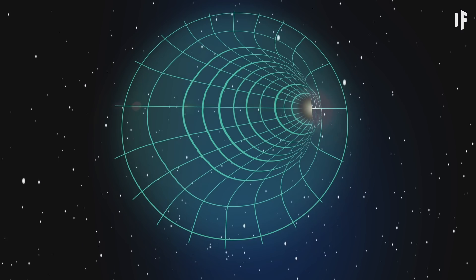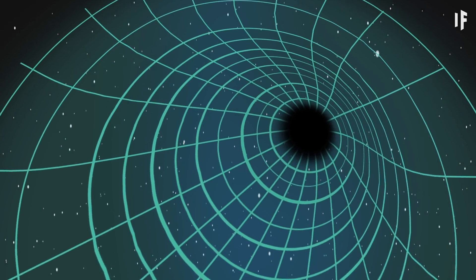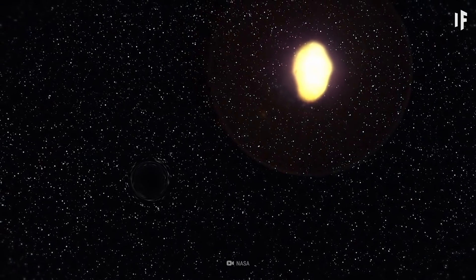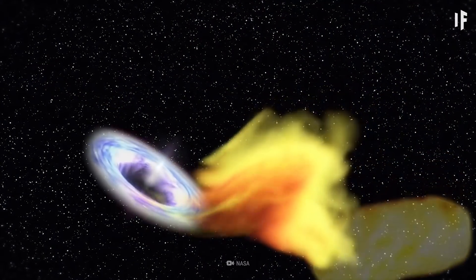After we pass the event horizon, we'll arrive at something called a singularity. It can be described as a point in space where mass has infinite density. Everything that goes into a black hole will end up here, including all the light it's sucked up.